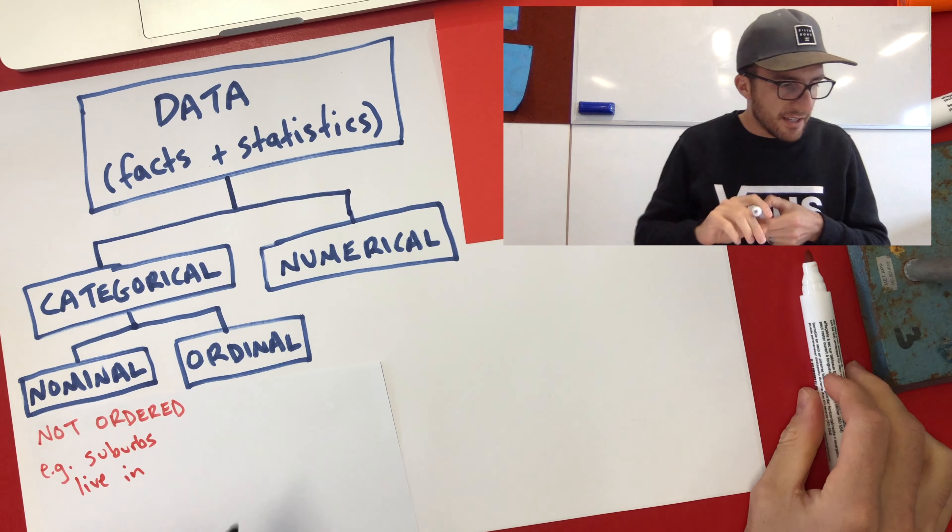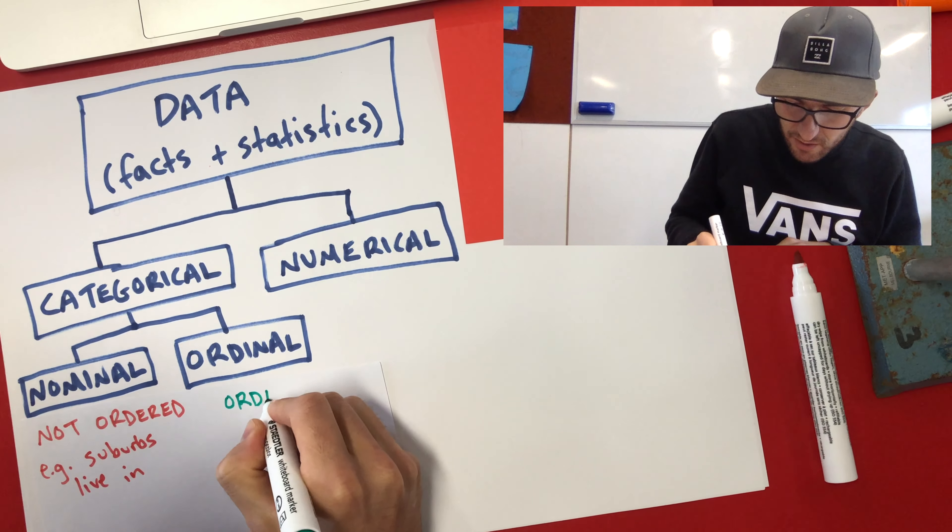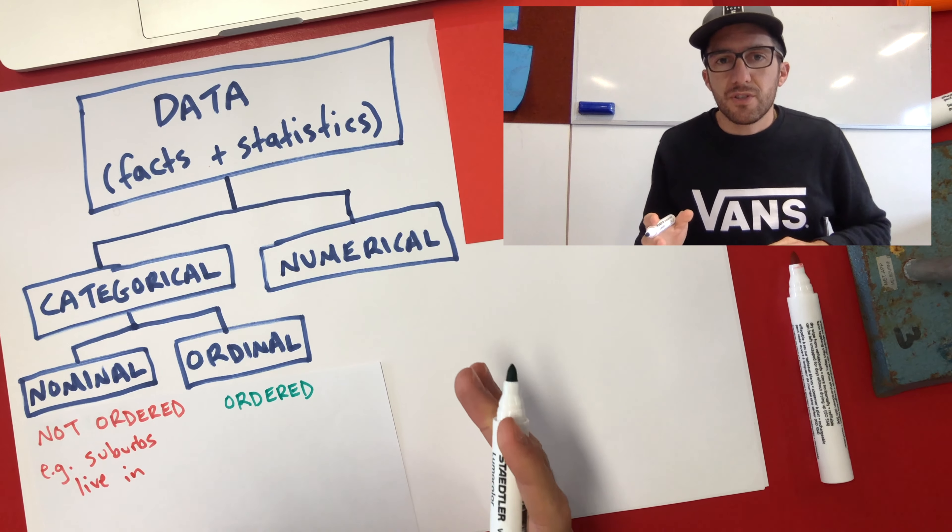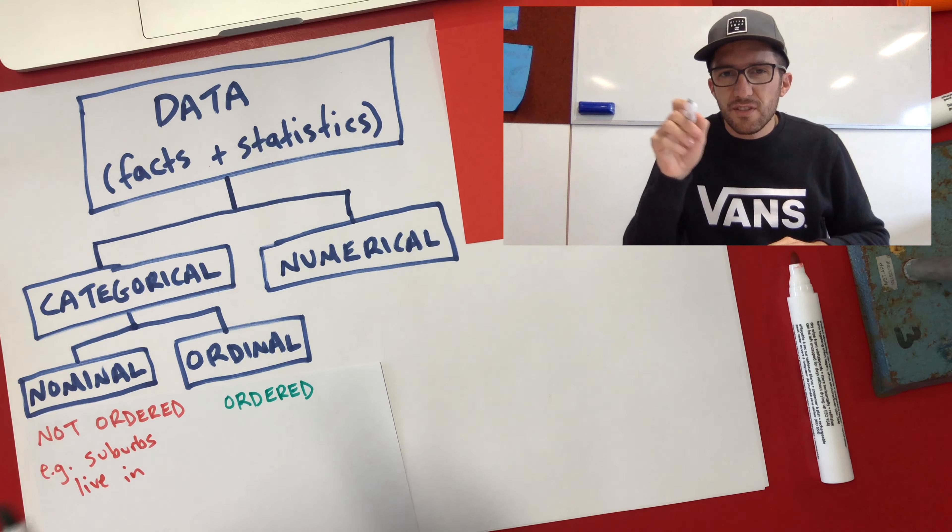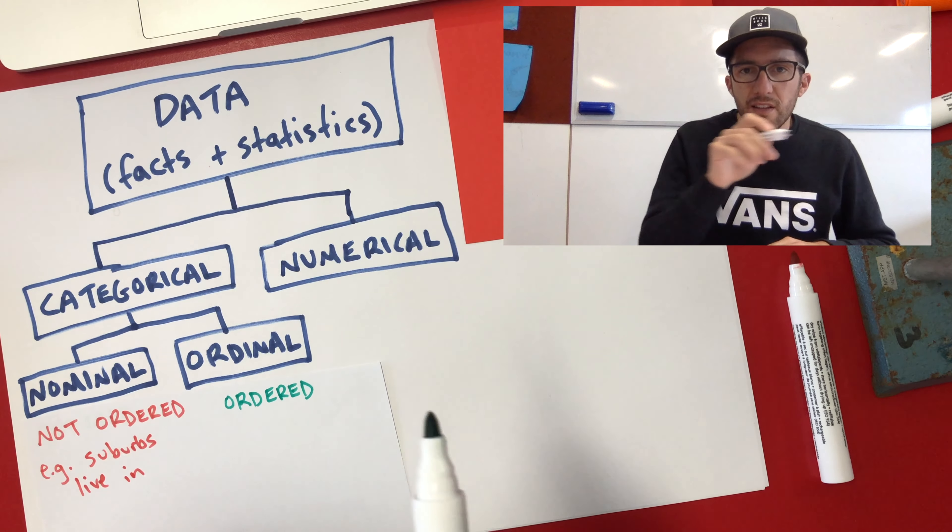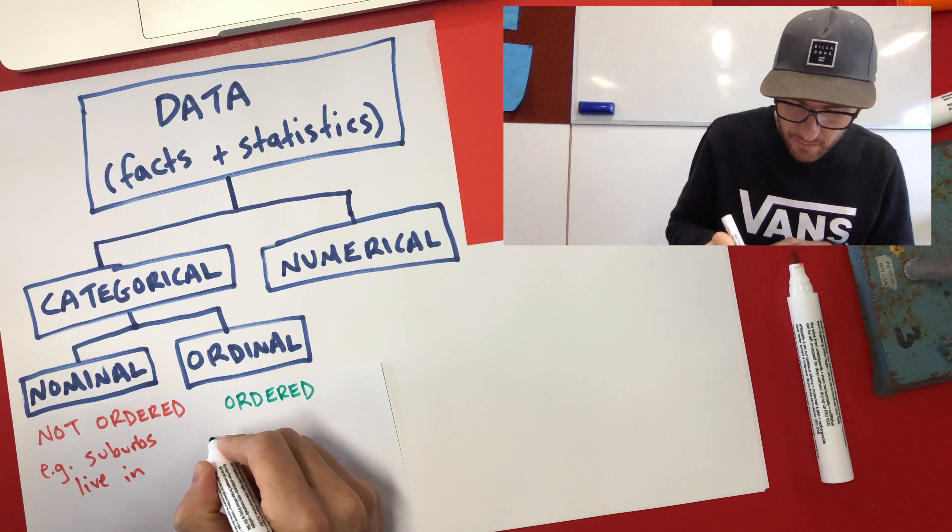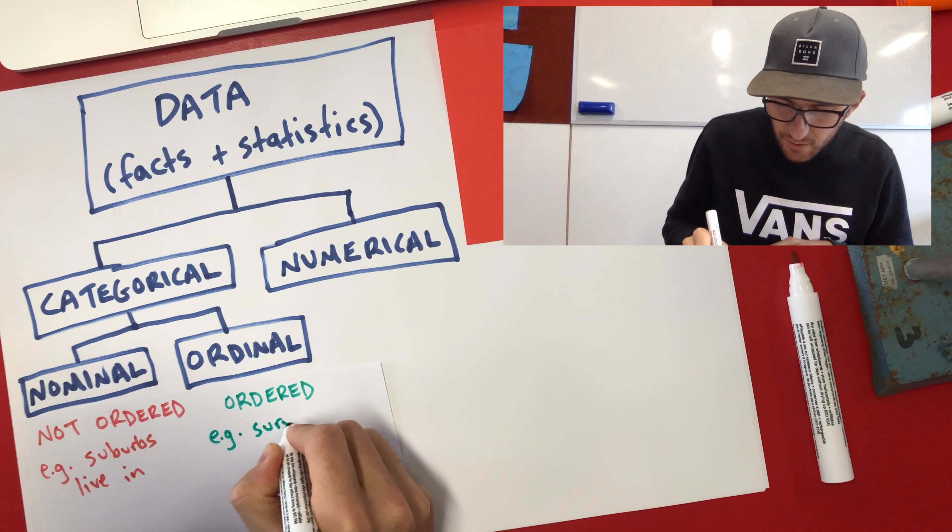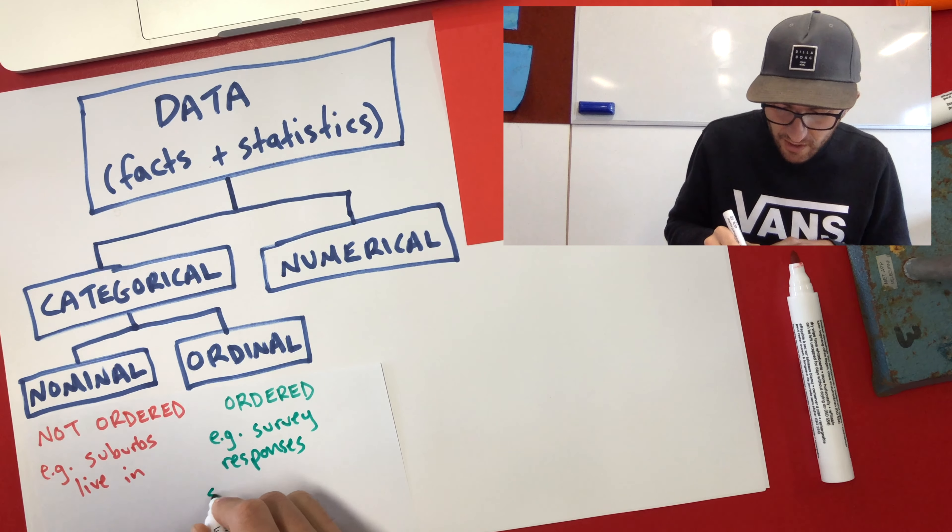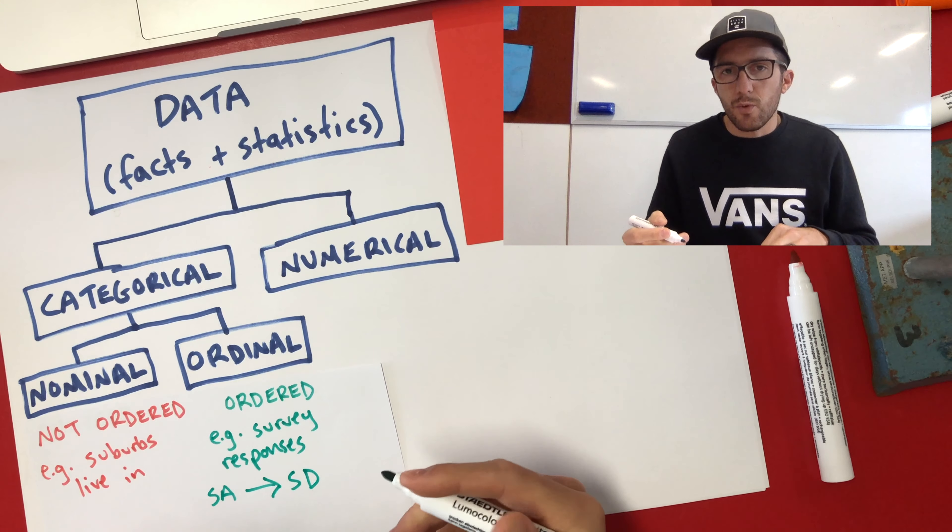So ordinal data is data that is ordered. And for example, that might be something like in a survey where you're asked a question, and you've got the little boxes, and it's like strongly agree, agree, neutral, disagree, strongly disagree, something like that where the data is then ordered. So we'll put here, for example, survey responses, strongly agree to strongly disagree, something like that. That would be an example of ordinal data.